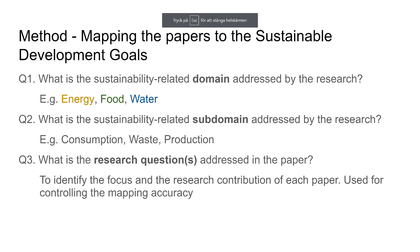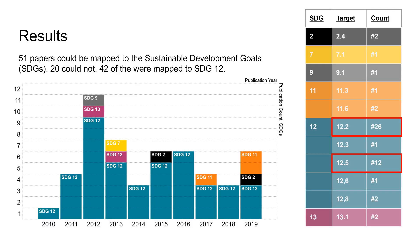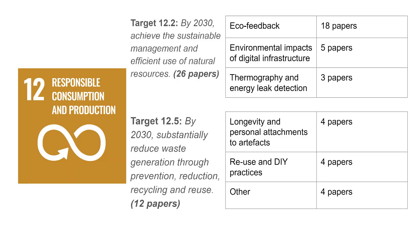The papers were mapped to the Sustainable Development Goals by screening them through a set of questions. We were able to map 51 of the 71 papers to the SDGs. The 20 papers that could not be mapped were papers that reflected on the field or worked with sustainability questions not included by the SDGs. The 51 papers that could be mapped were distributed among 6 different SDGs and 11 different targets. 42 of these papers were mapped to SDG 12, Responsible Consumption and Production.